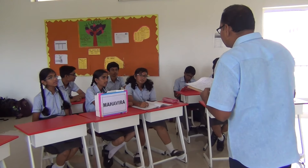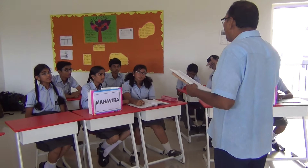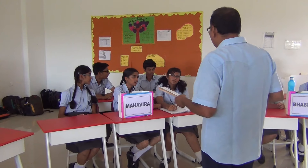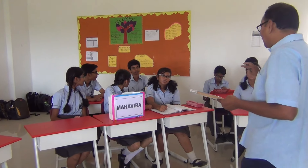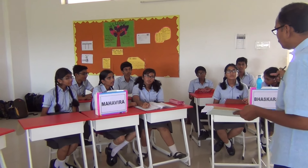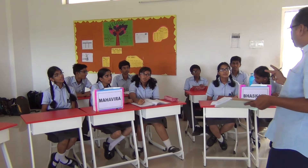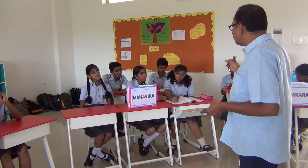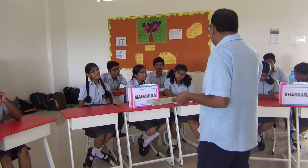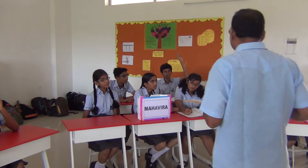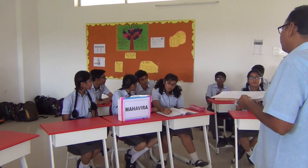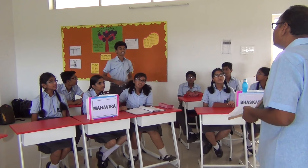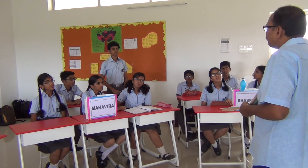Relationship between LCM, HCF and the 2 numbers. What is the relationship among those 4 things? If the two numbers are A and B, the product of the numbers equals HCF multiplied by LCM. Very good.